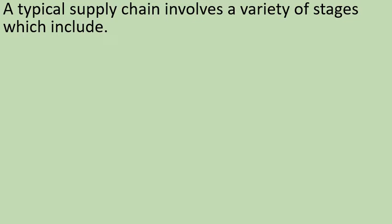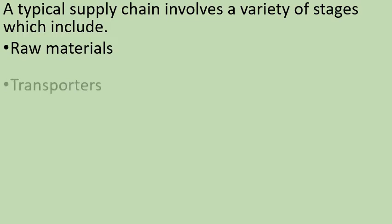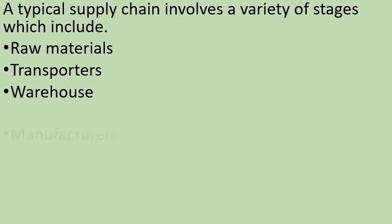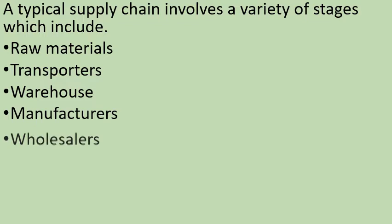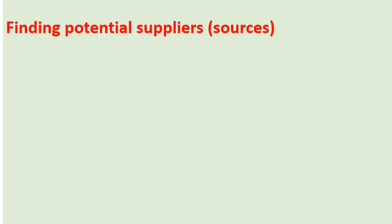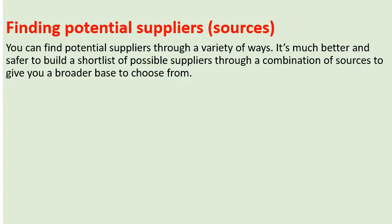The typical supply chain involves a variety of stages which might include the following: raw materials, warehouse, manufacturers, wholesalers, retailers, and customers — with agents to ensure that they feel. How do you get potential suppliers? What are their sources? You can find potential suppliers through a variety of ways. It is much better and safer to build a shortlist of potential suppliers through a combination of sources to give you a broader base to choose from.